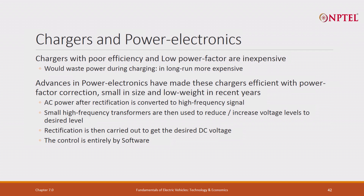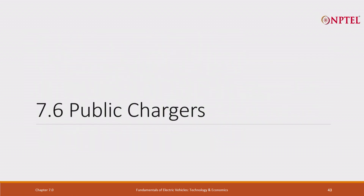Chargers are power electronics. Chargers with poor efficiency and low power factor are inexpensive, but they waste power and in the long term turn out to be expensive. Advances in power electronics have made chargers efficient with power factor correction, small in size, and low weight in recent years. AC power after rectification is converted to a high frequency signal — 10 to 15 kilohertz — and small high-frequency transformers are used to step the voltage up or down to the desired level, followed by rectification to the desired DC voltage. The control is entirely software; a lot of the charger design is now software. That is as far as the onboard charger is concerned.